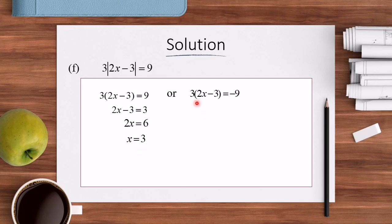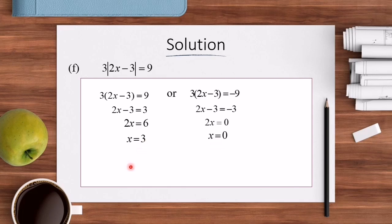For 3(2x − 3) = −9, we simplify to get 2x − 3 = −3, then 2x = 0, giving X = 0.